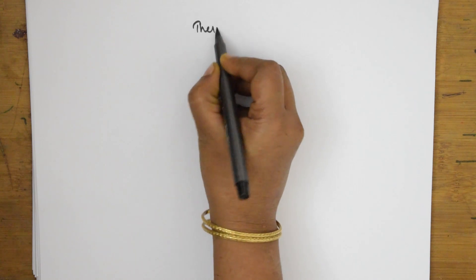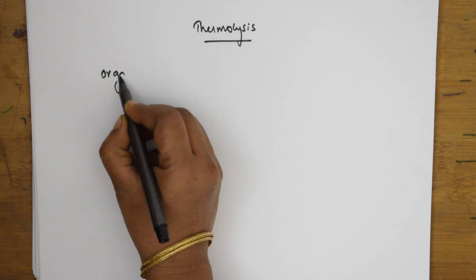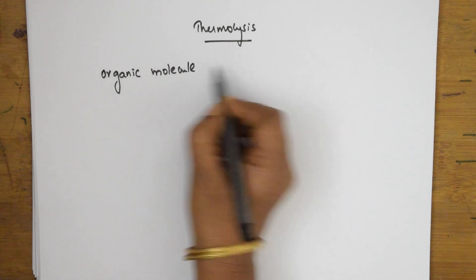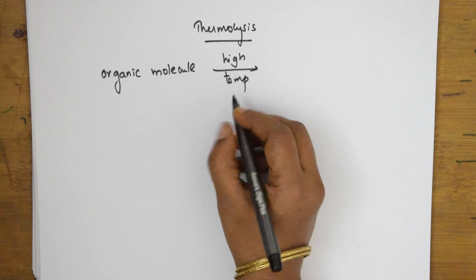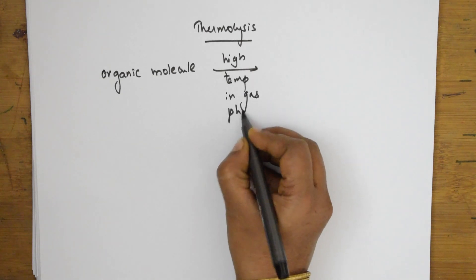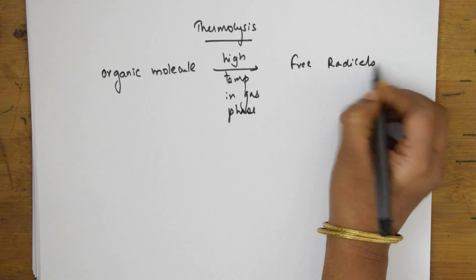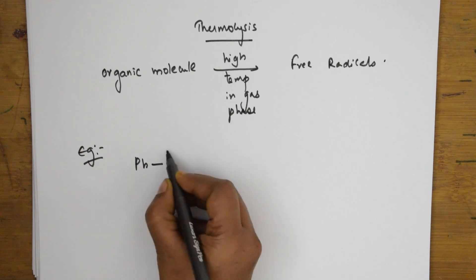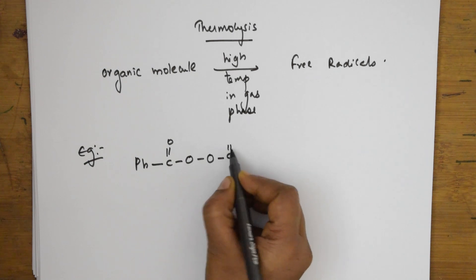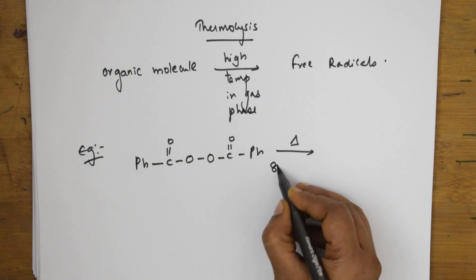Thermolysis means lysing an organic molecule in the presence of heat. In thermolysis, we take an organic molecule and introduce it to high temperatures in the gas phase. Free radicals are going to form. Let us take one example: I have Ph–C(=O)–O–O–C(=O)–Ph. This is a peroxide. I'm heating it to high temperature — almost 80 to 100 degrees centigrade.